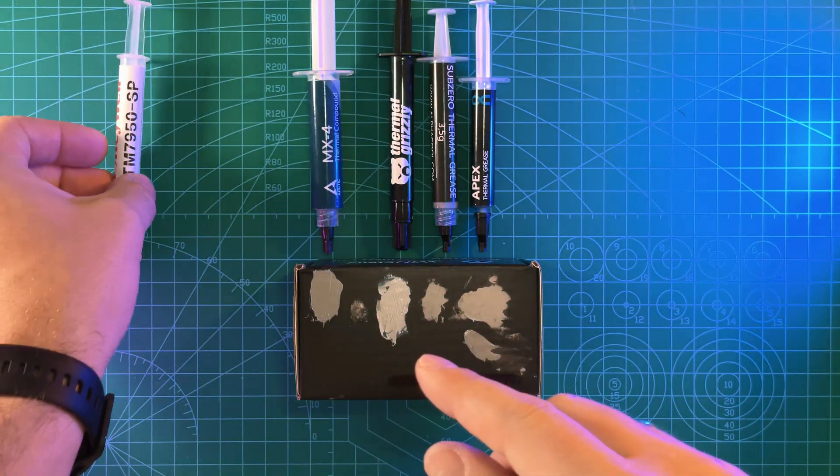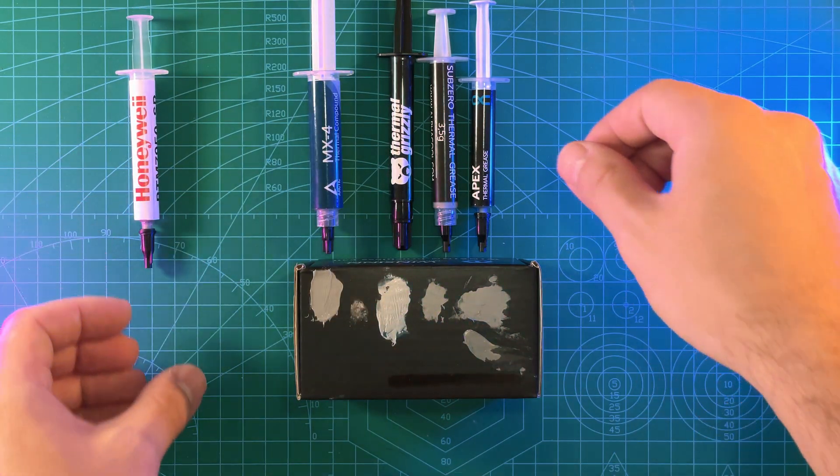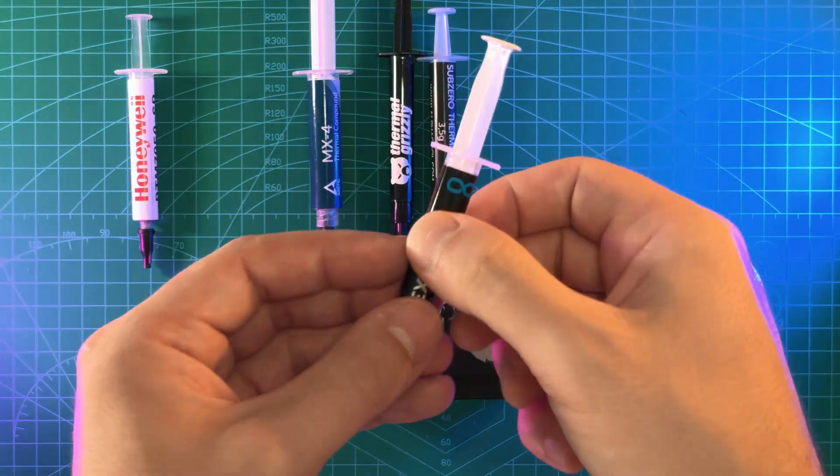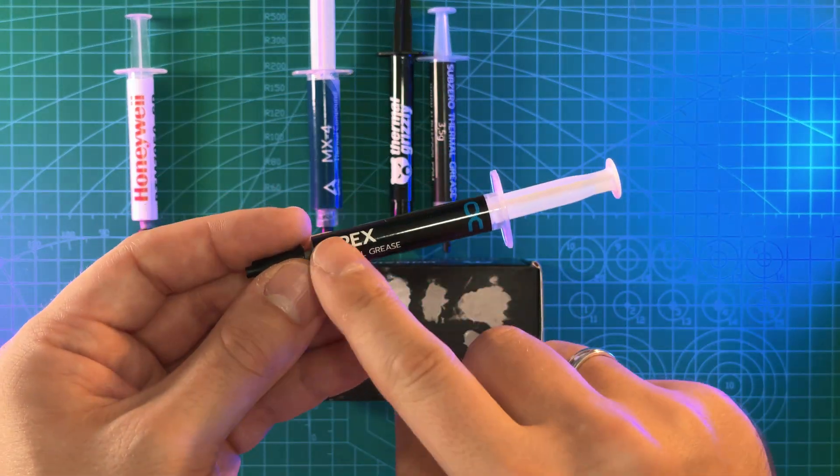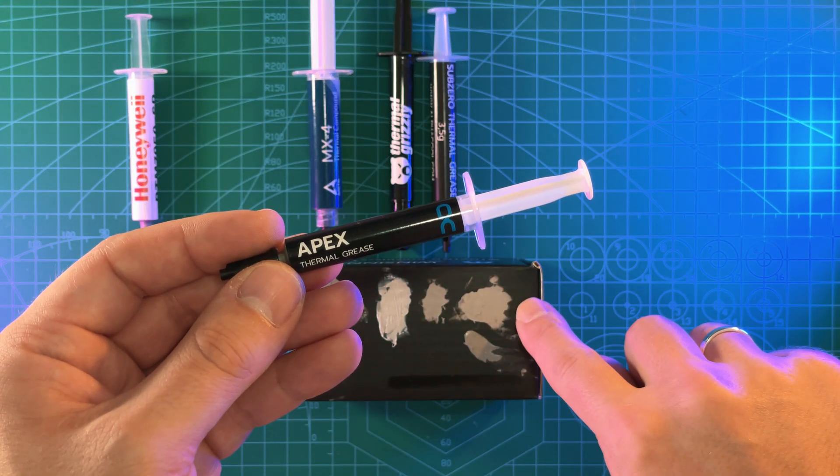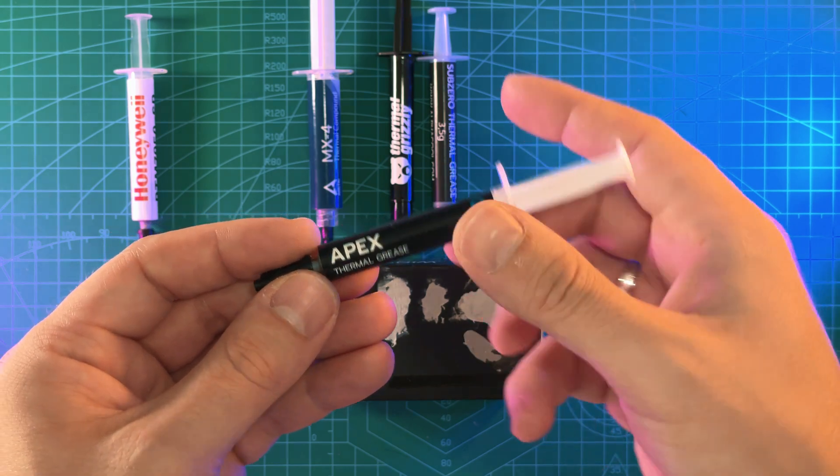Alphacool Apex is the best one in my opinion, it just ticks all the boxes. It is hard paste with great thermal conductivity and application slightly easier than Honeywell. And the main downside is that it is still expensive one to get.